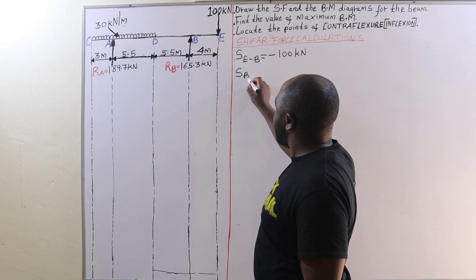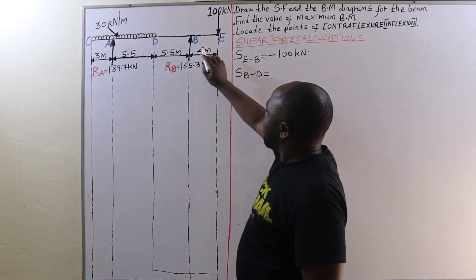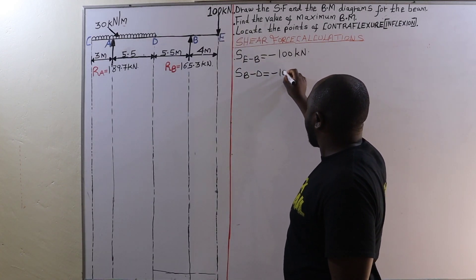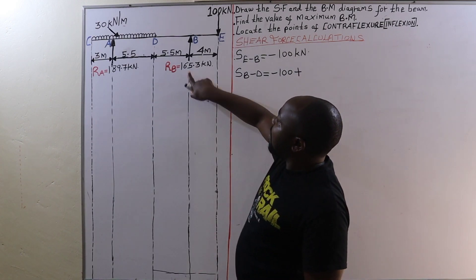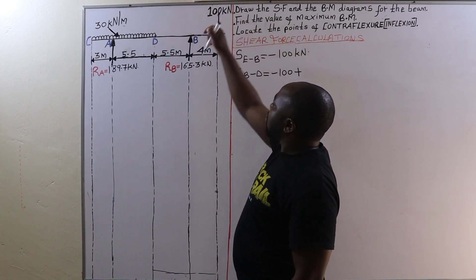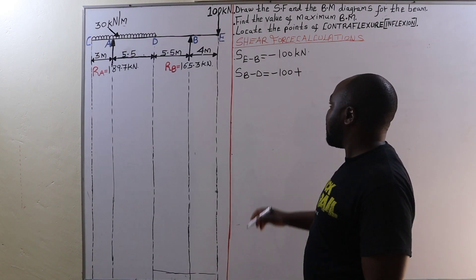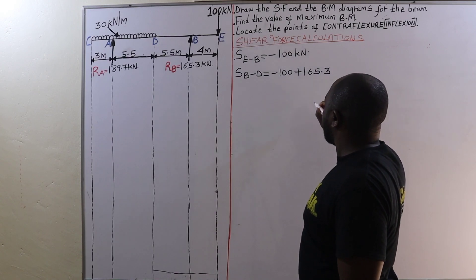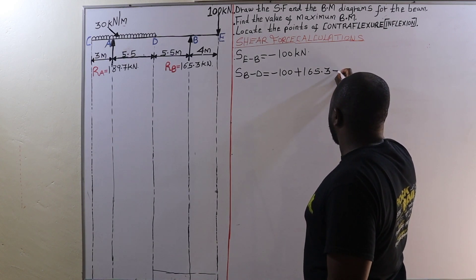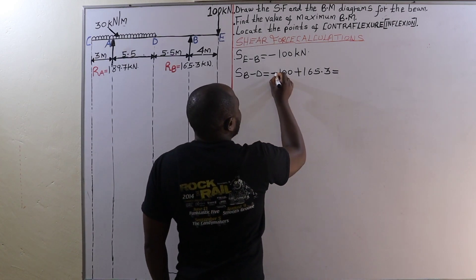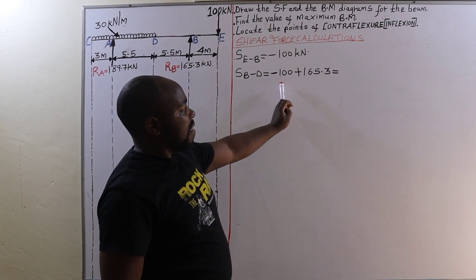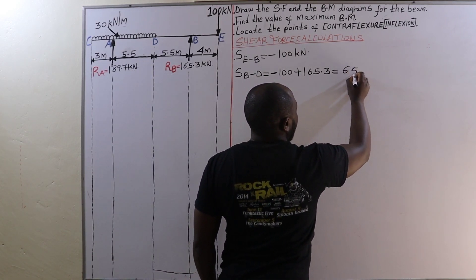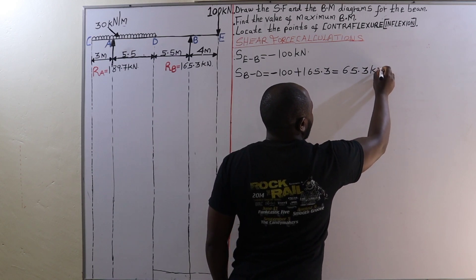The shear force between B and D: we have negative 100 kilonewtons plus the upward acting reaction at B of 165.3 kilonewtons, which acts in the opposite direction. Therefore, when we find the sum of negative 100 and 165.3, we get 65.3 kilonewtons.